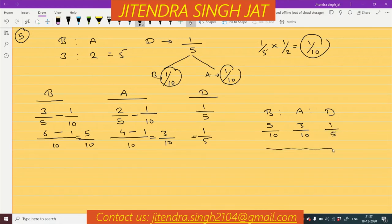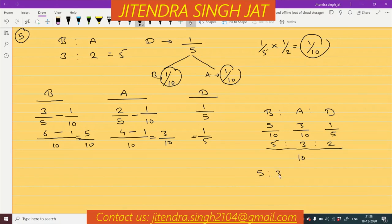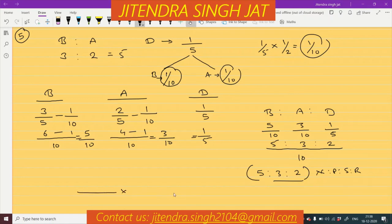So again we take LCM to equalize the denominators. The LCM of 10 and 5 is 10, giving us 5/10 : 3/10 : 2/10. So the new profit sharing ratio among Bharati, Aastha and Dinkar is 5 : 3 : 2. I hope the question is clear to everyone.